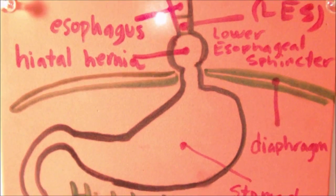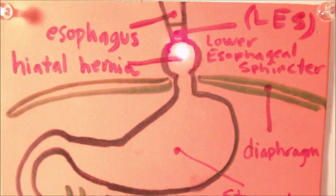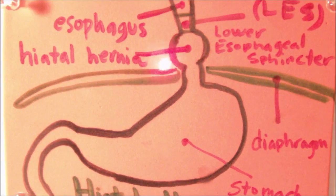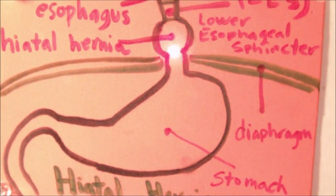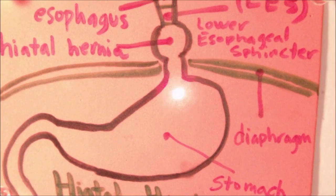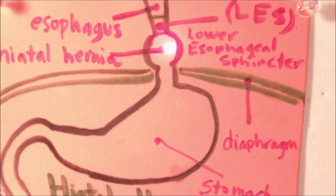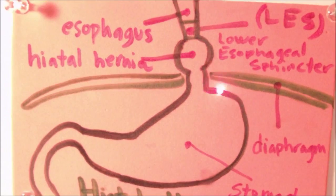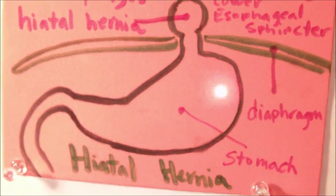Now this is usually due to weakness within the diaphragm. What occurs is basically the cardiac sphincter is compromised and there's a decrease in functionability within the cardiac sphincter, therefore gastric juices move back up into the esophagus.